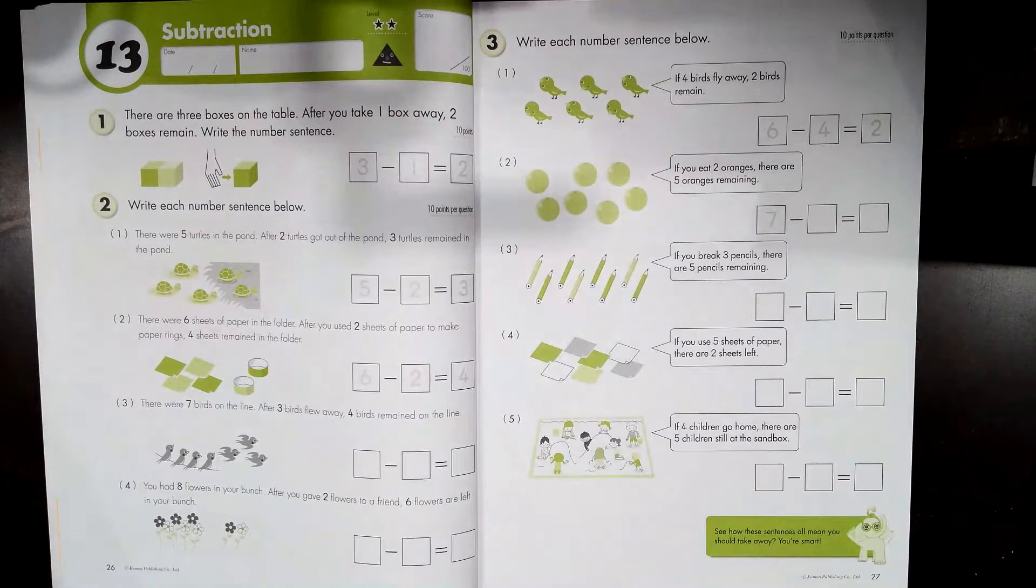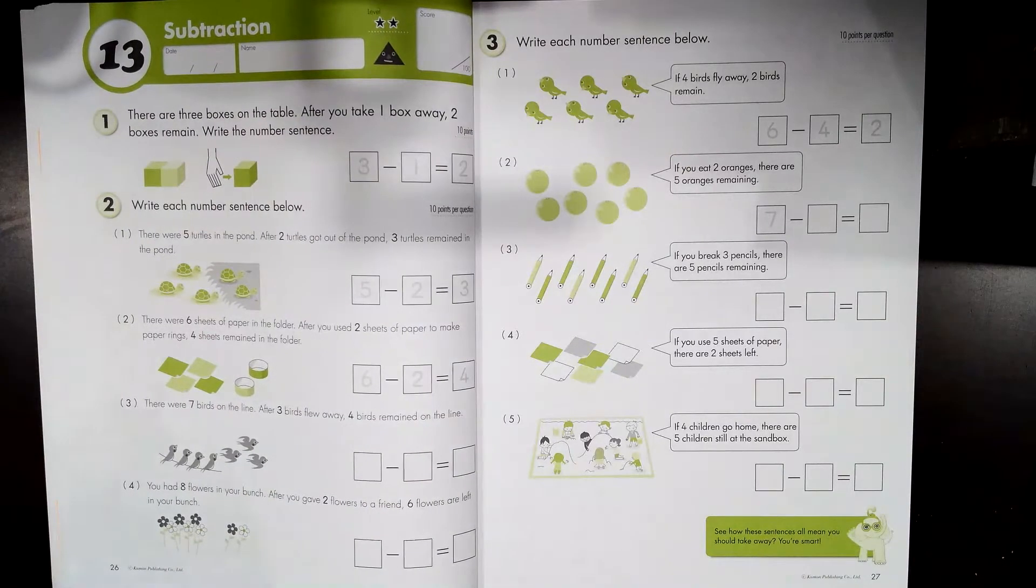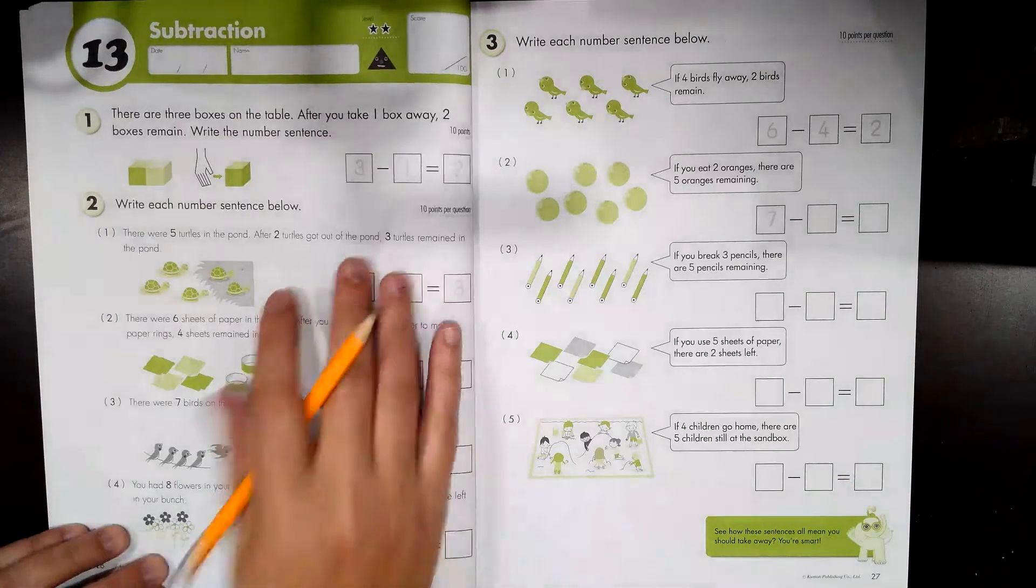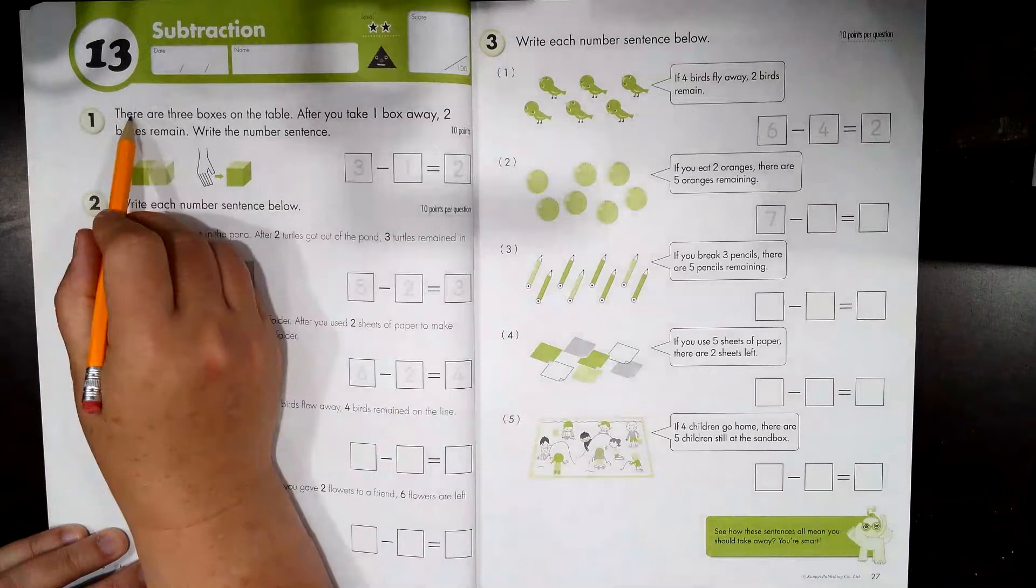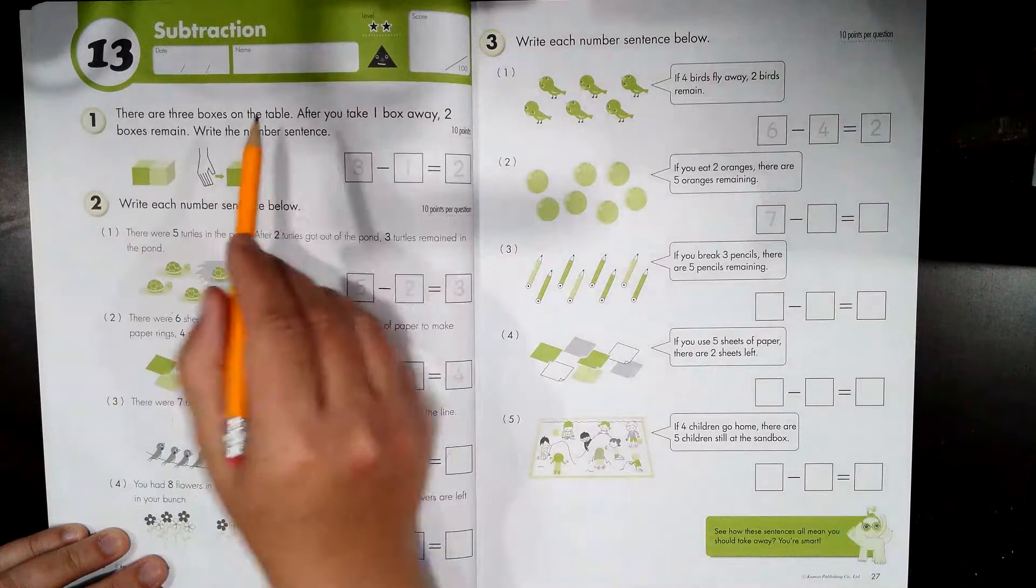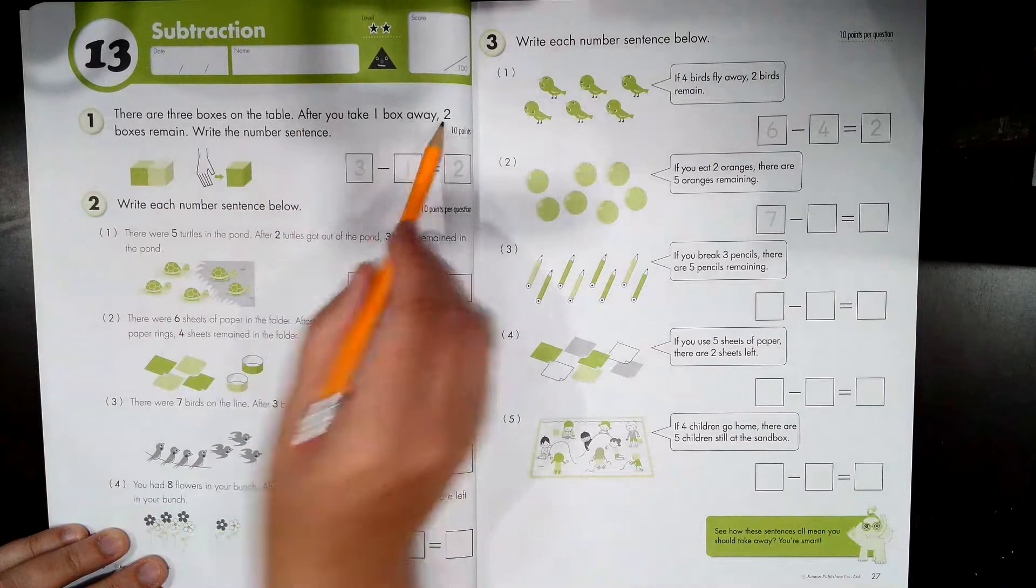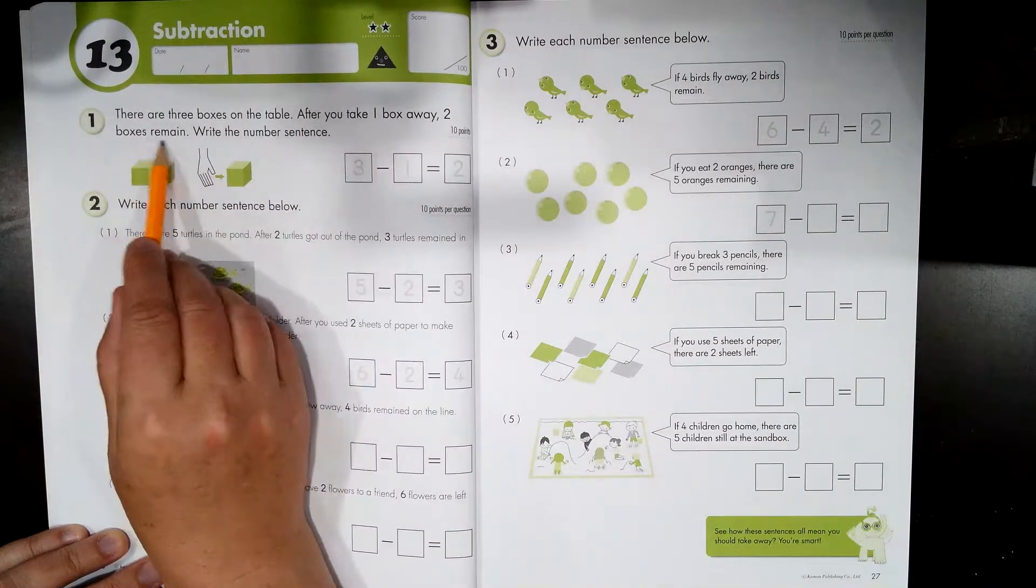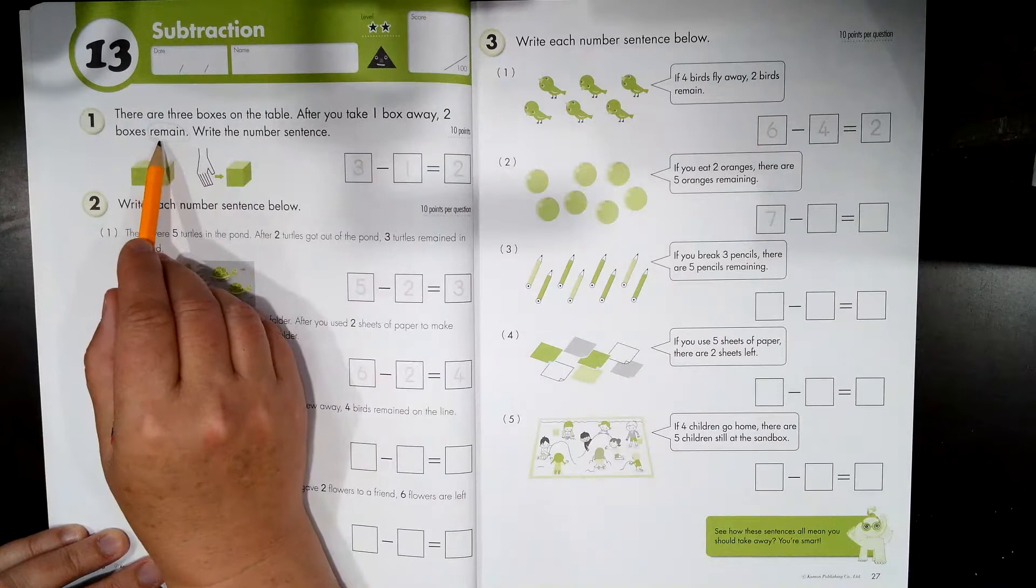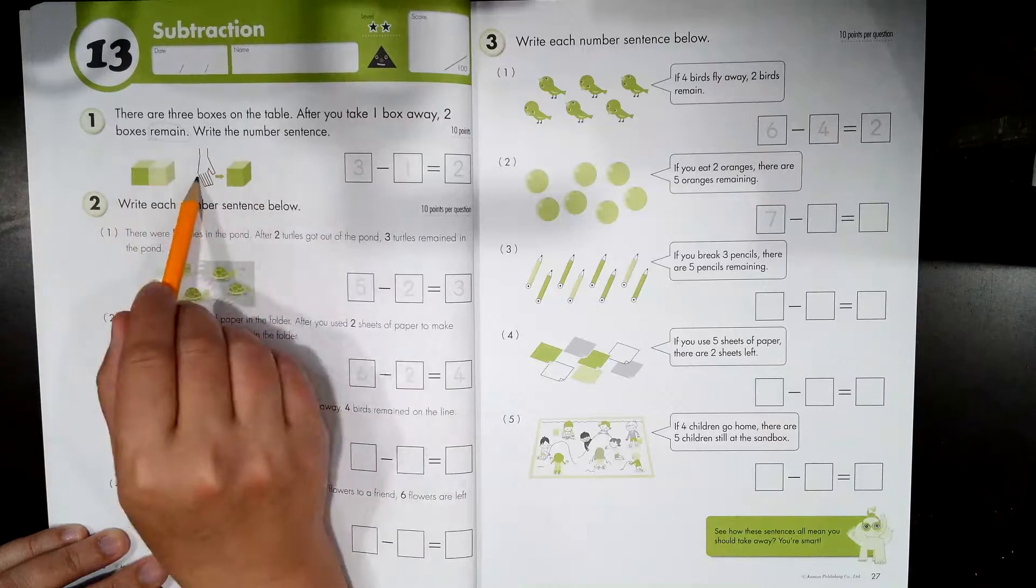We're doing subtraction, which means we're taking away from a group of things. If we have some and we take some away, we are doing subtraction. Listen to the number one problem here. There are three boxes on the table. After you take one box away, two boxes remain. Remember that keyword, that leftover word remain? Write the number sentence. So there were three boxes and you take one away. That means you have three minus one equals two.